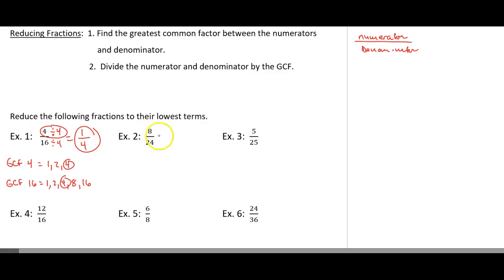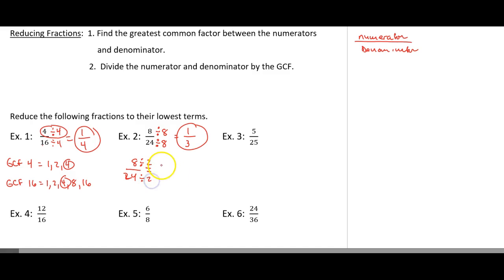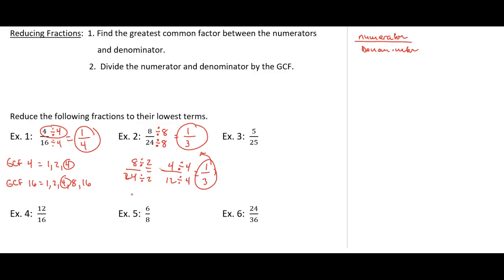If I look at 8 and 24, the largest number that goes into 8 and 24 would be 8. So 8 divided by 8 gives me 1, and 24 divided by 8 gives me 3. Now, what happens if you said 2 was the GCF? If I divide the numerator by 2 and the denominator by 2, that gives me 4 over 12. I have to recognize that 4 and 12 can both be divided by another number, because we always want to reduce to the lowest terms. So 4 divided by 4 is 1, and 12 divided by 4 is 3. You get the same answer either way. So even if you don't find the greatest common factor, you may just have to reduce more than once.